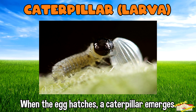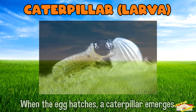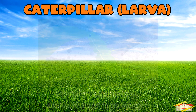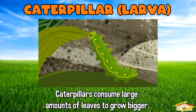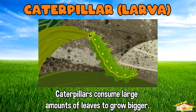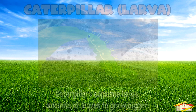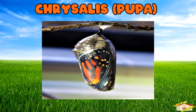Caterpillar: when the egg hatches, a caterpillar emerges. Caterpillars consume large amounts of leaves to grow bigger.